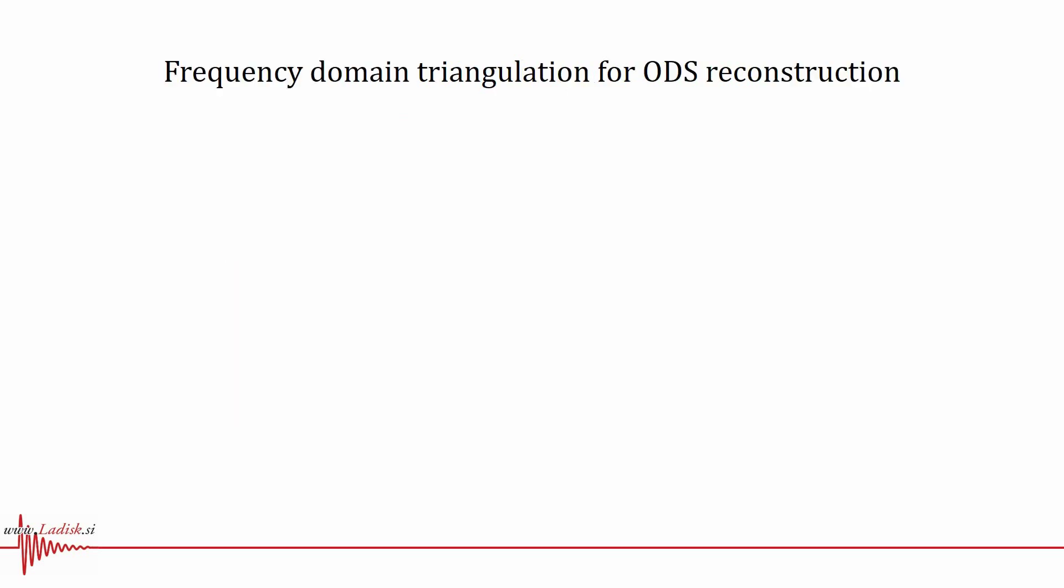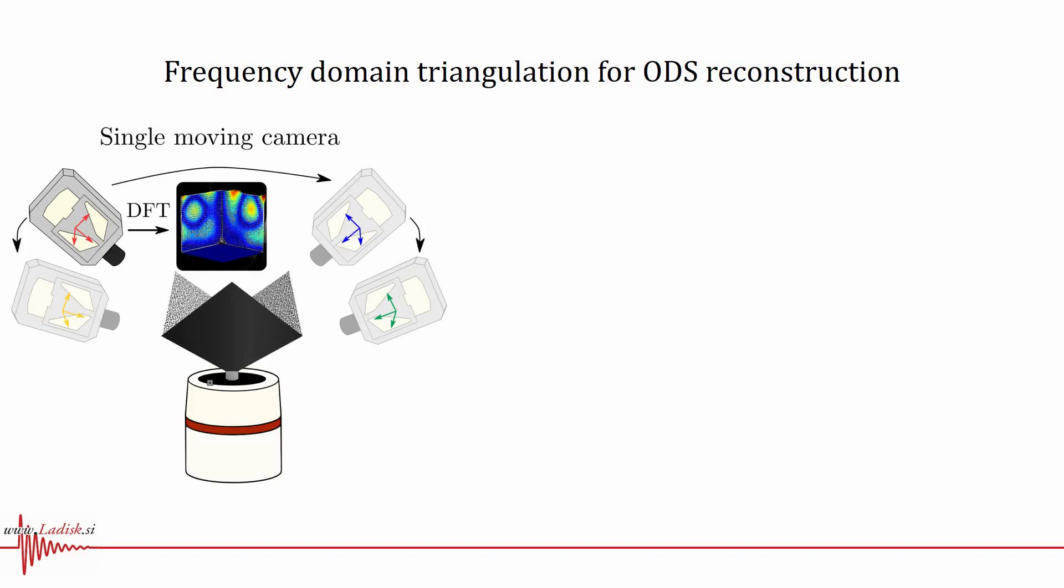In our proposed method, we use a single moving high-speed camera to capture the observed stationary vibration from various points of view. Using the discrete Fourier transform, the measured image displacements are transformed into the frequency domain. This way multiple frequency domain images of the observed displacements are constructed.